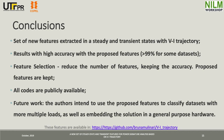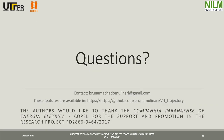The main conclusions are: a new set of features extracted from transient state VI trajectories is proposed. Results show high accuracy with the proposed features, above 90% for some datasets. Feature selection reduces the number of features while keeping performance, and the proposed features are retained in the final results. All code can be downloaded from GitHub. For future work, the authors intend to use the proposed features to classify datasets with multiple loads, as well as embedding the solution in general-purpose hardware. Thanks for your attention.